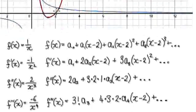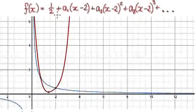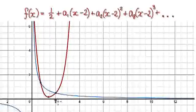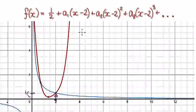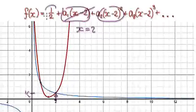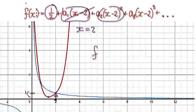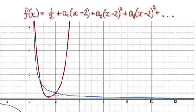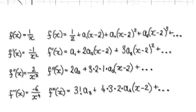If we insert 1/2 into the series and plot it, the graph shifts up to 1/2. When x equals 2, everything else disappears, so f(2) of the red line now equals f(2) of the blue line — you can see the two lines match up at that point.